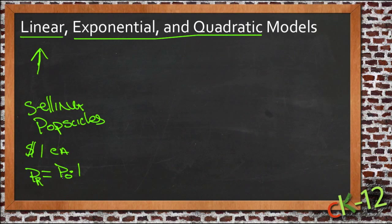Your profit is equal to the number of popsicles times a dollar. So if you were going to graph that, one popsicle, if we do popsicles across the x-axis here and your profit across the y-axis, one popsicle is one dollar, two popsicles is two dollars, three popsicles is three dollars, and so on.